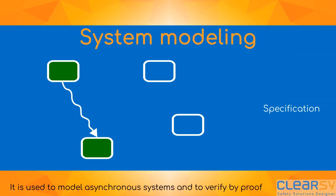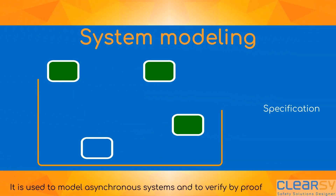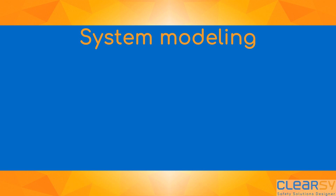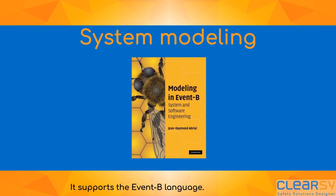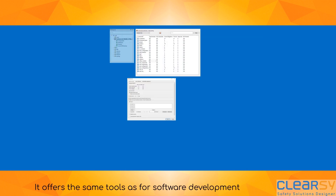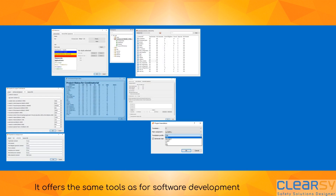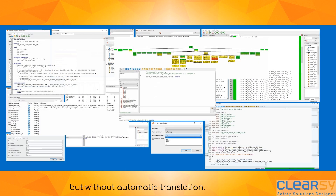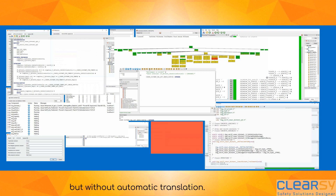It is used to model asynchronous systems and to verify by proof their specification against properties. It supports the Event B language and offers the same tools as for software development but without automatic translation.